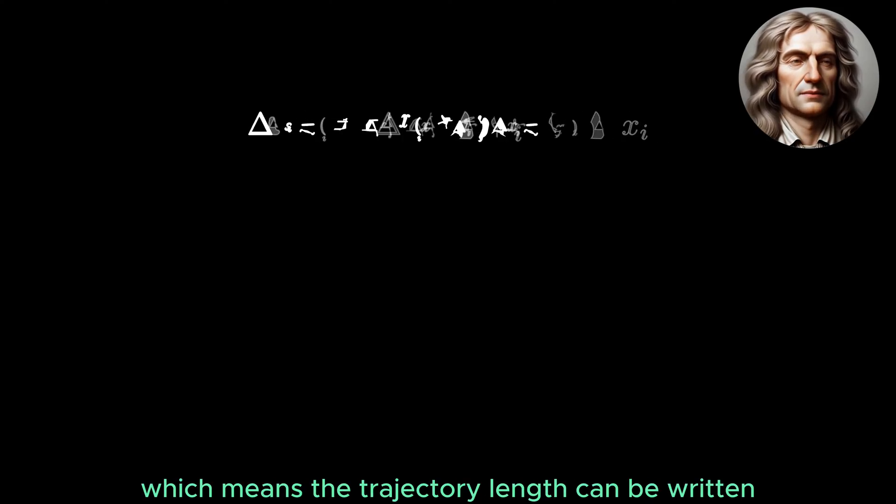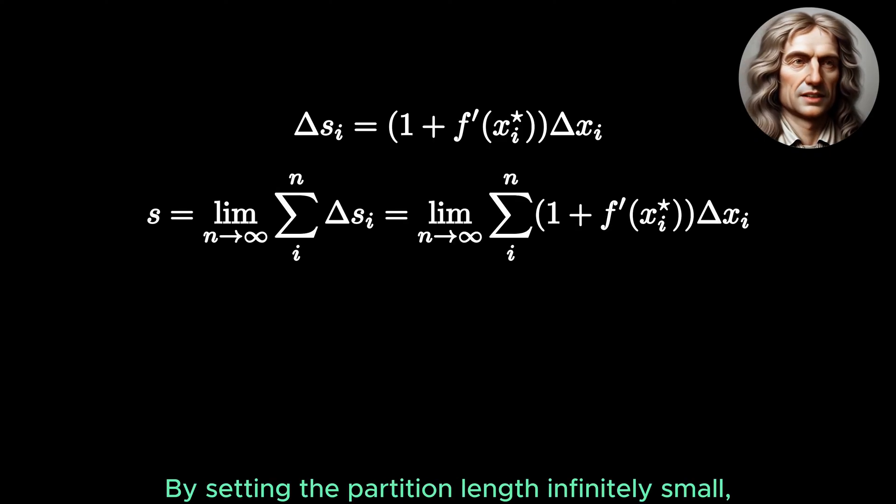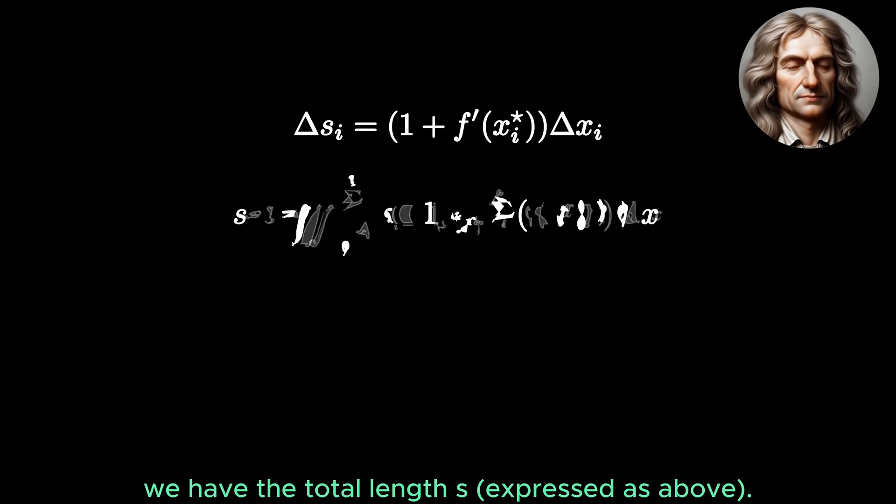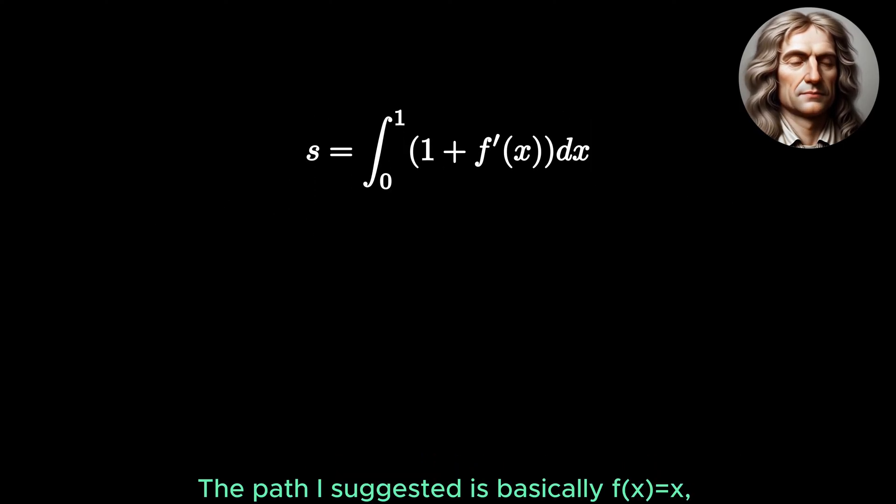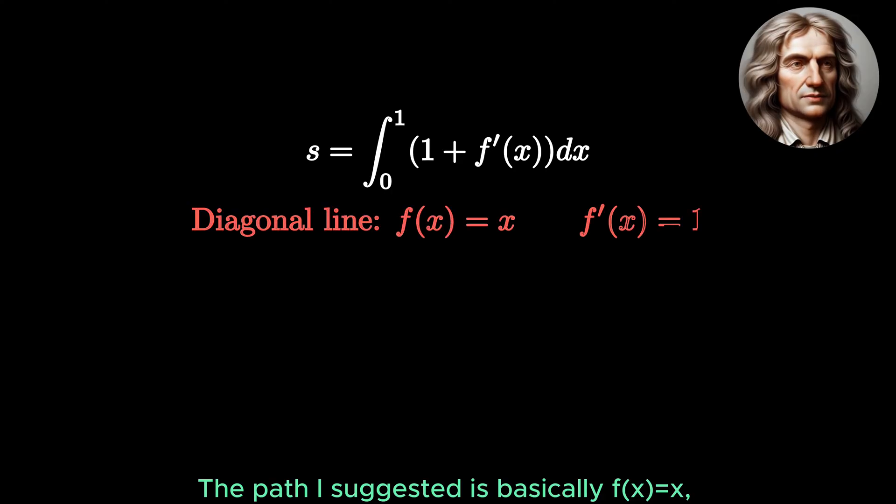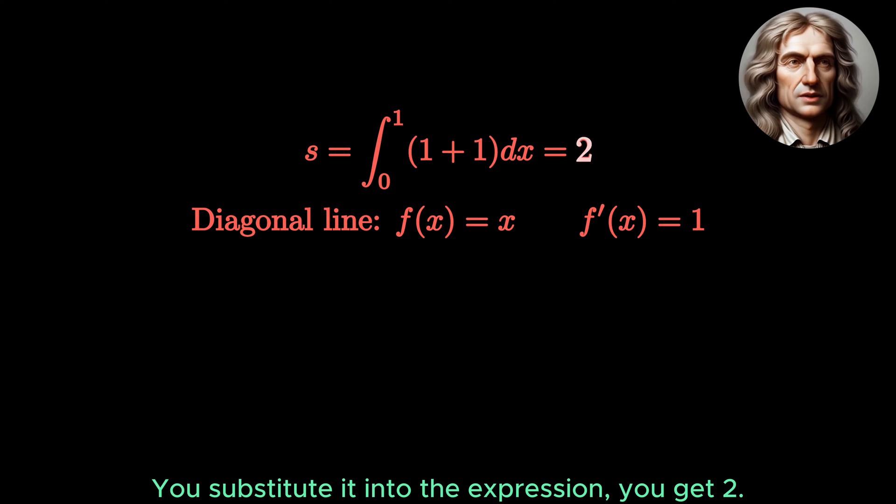Which means the trajectory length can be written as the following. By setting the partition length infinitely small, we have the total length. The path I suggested is basically f(x) equals x, so the derivative is just 1. You substitute it into the expression, you get 2.